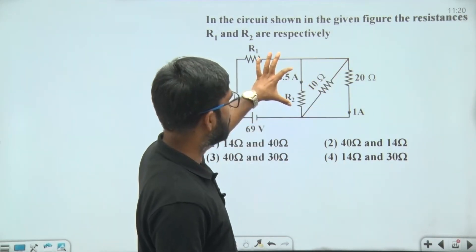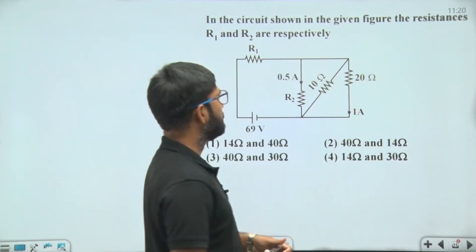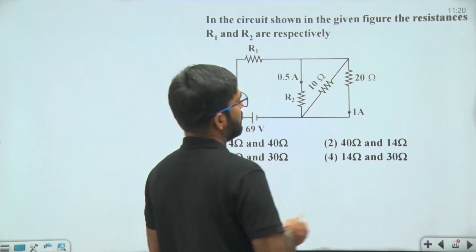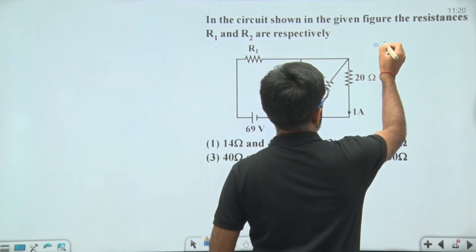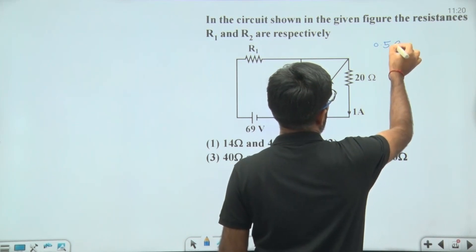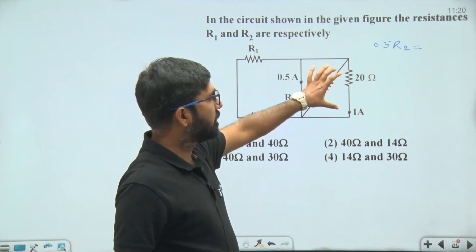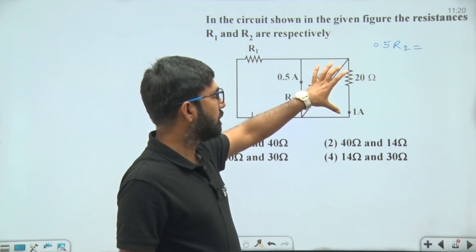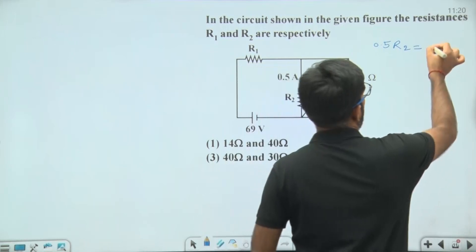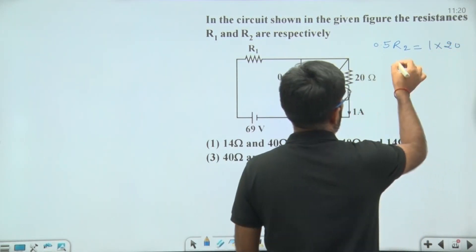The potential difference across R2 is given by current into resistance: 0.5 into R2. This equals the potential difference across the 20 ohm resistance, which is current 1 into resistance 20, giving 20 volts. So 0.5 × R2 = 1 × 20.